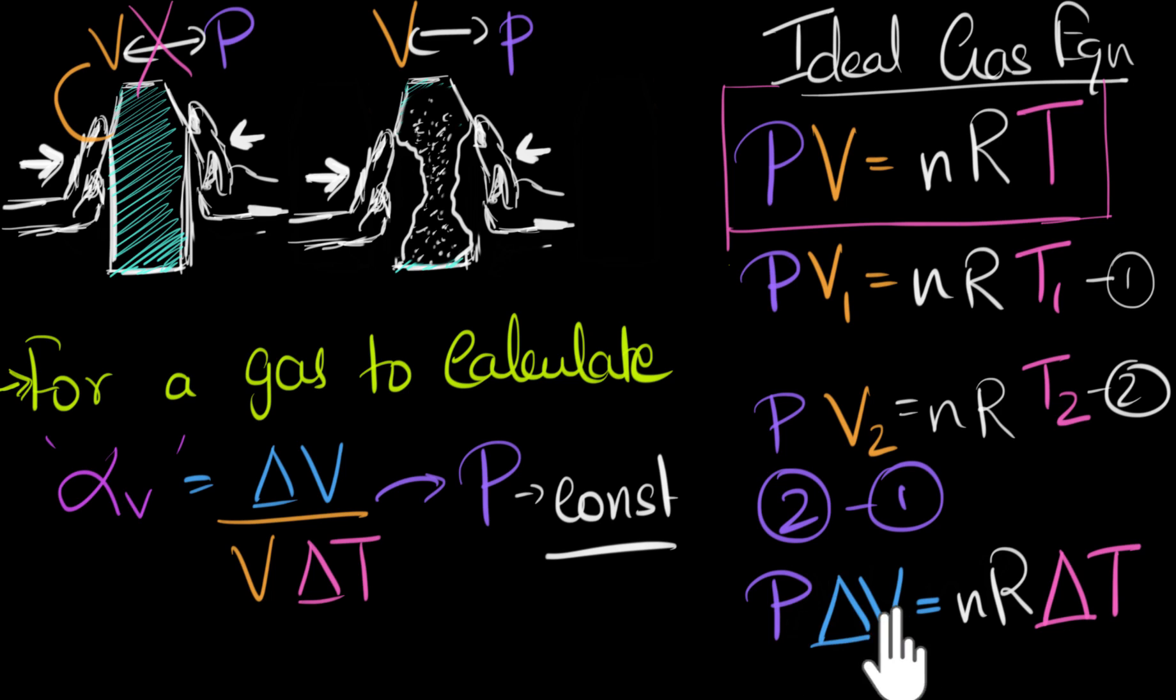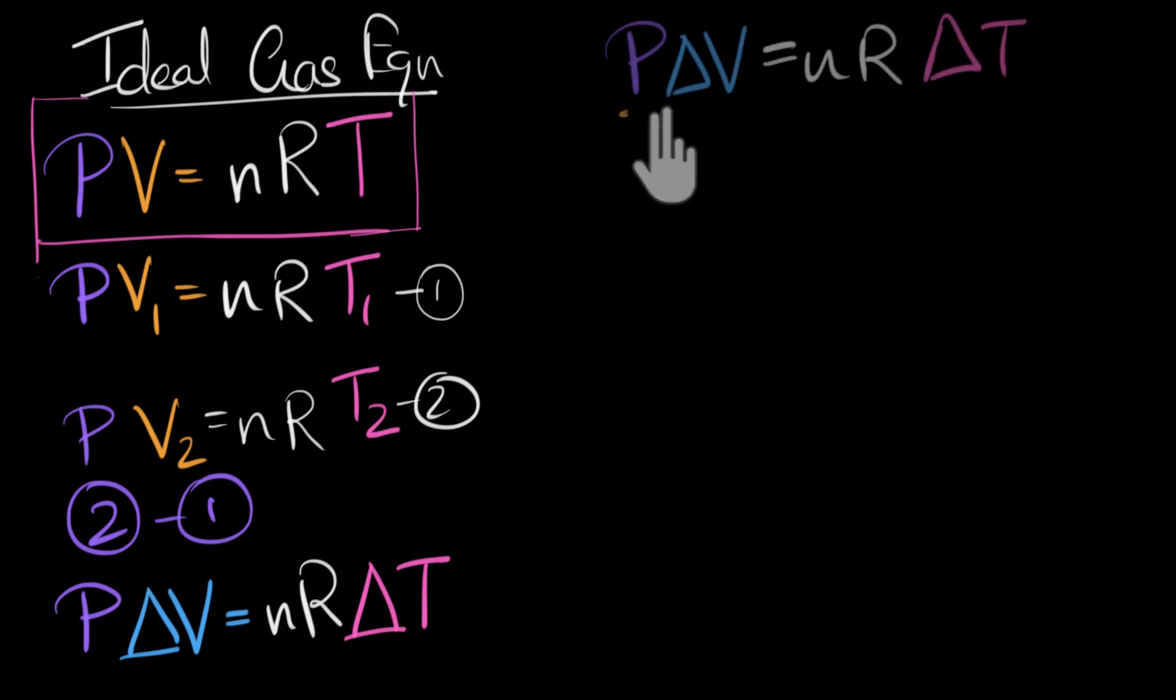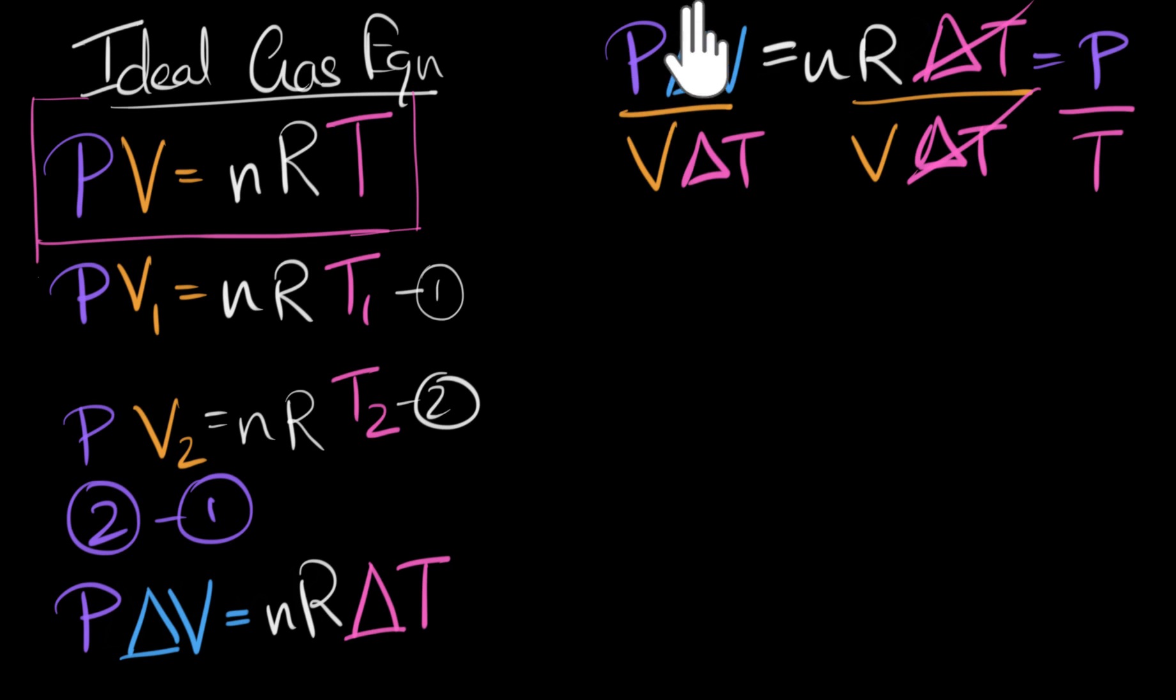Now, from this equation, we can calculate what delta V is, the change in volume, but we want to calculate how much the volume changes per unit volume per unit temperature change. So, let's go ahead and divide this equation by V delta T. V delta T cancels out over here, and notice we now have nR divided by V. nR divided by V is just P by T. So this can be further written as P divided by T. And the P goes, and notice, now the left-hand side is what we want. Change in volume per unit volume per unit change in temperature. We call that alpha V, and notice we have now calculated what alpha V is.